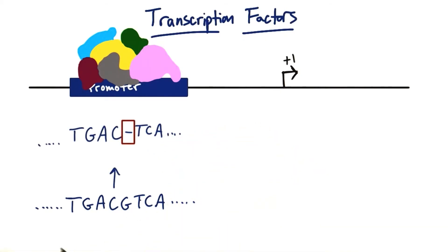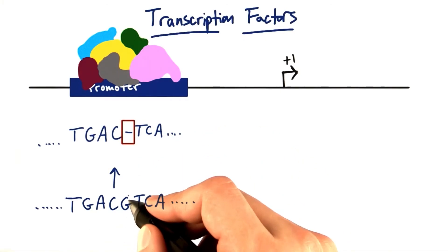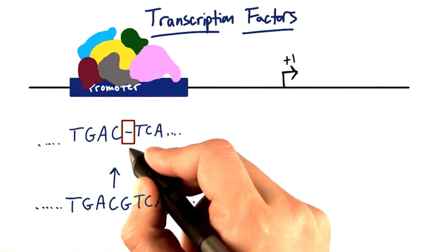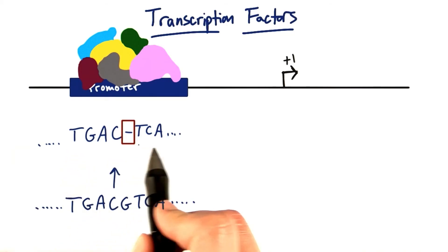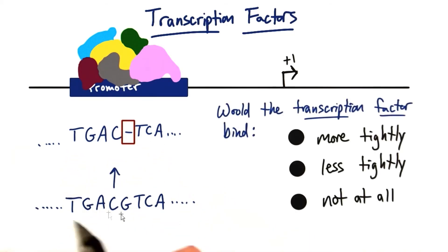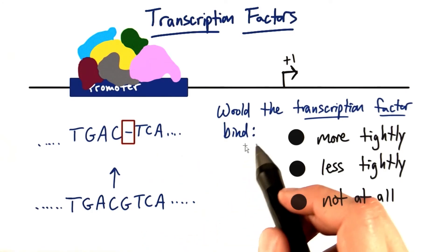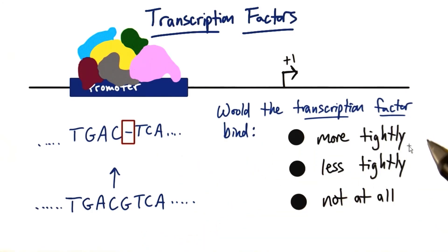Let's just say there was a change in the sequence here so that this G is missing. There's a small deletion, let's say, and now the sequence reads TGACTCA. Do you think this change in the DNA sequence at a promoter region would result in the transcription factor binding more tightly, less tightly, or not at all?